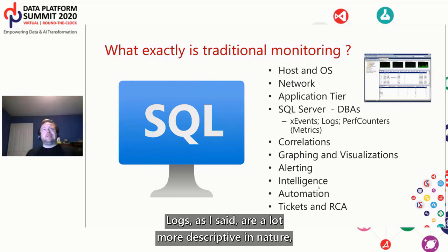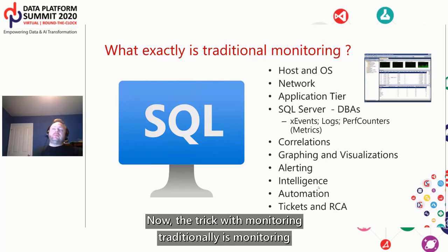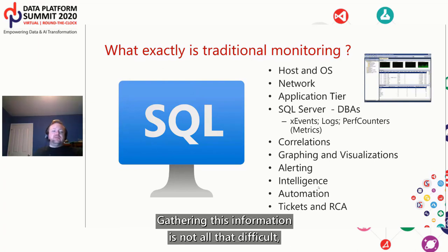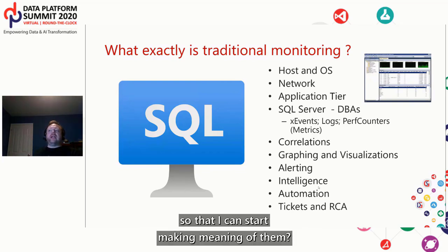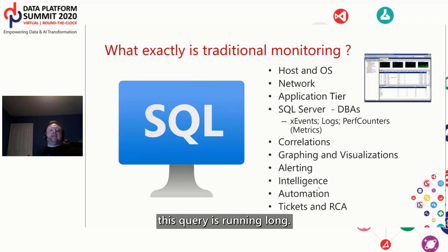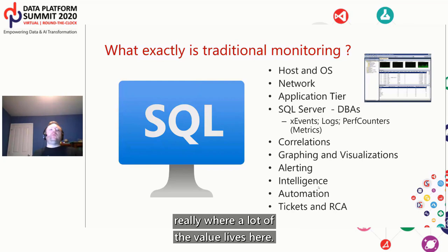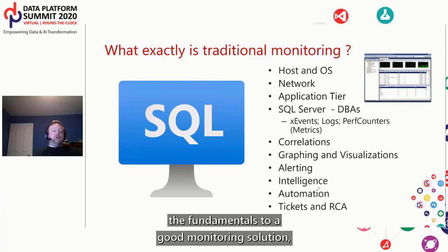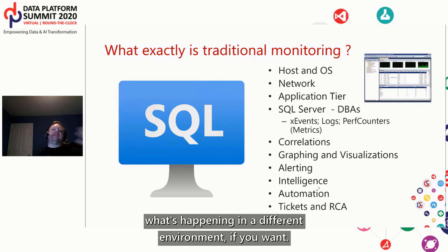Logs are a lot more descriptive in nature, and X events are based on when something happens and you want to report on it. The trick with monitoring traditionally is that monitoring these things in isolation is not all that difficult — gathering this information is not hard. But what's very hard is correlating these data sets with each other to start making meaning of them. My SQL Server is slow, this query is running long — why? Because something is wrong on the disk. That correlation between the two pieces is really where a lot of the value lives.